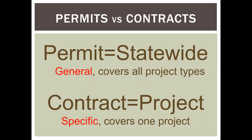What's the main difference between permits and contracts? In this case I'm using the Washington State Construction Stormwater General Permit. It covers the entire state of Washington, covers all project types — it's very general. Contract project specs are very specific, hence the name. They need to be because they deal with one particular project, one particular situation.